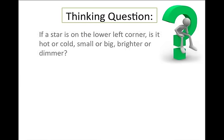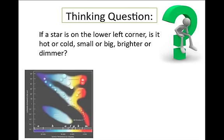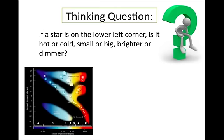Thinking question. If a star is on the lower left corner, is it hot or cold? Small or big? Brighter or dimmer? That's right. It's hot, small, and dimmer just like a white dwarf star.